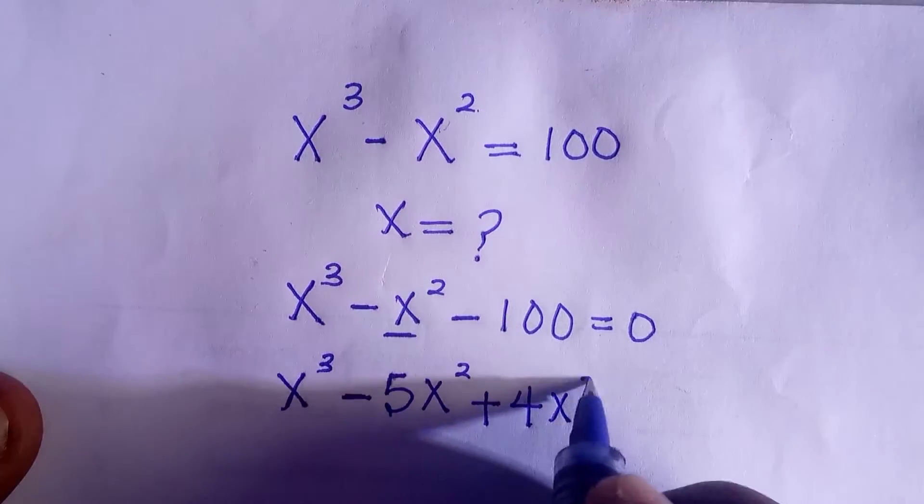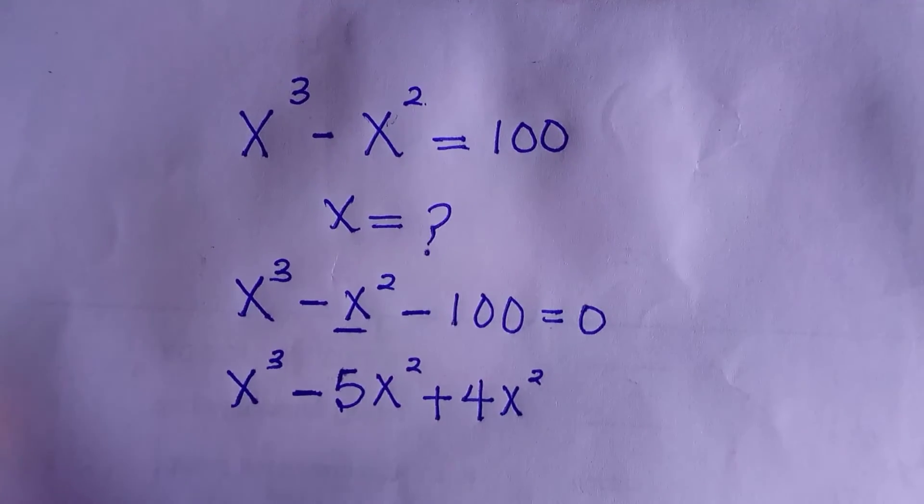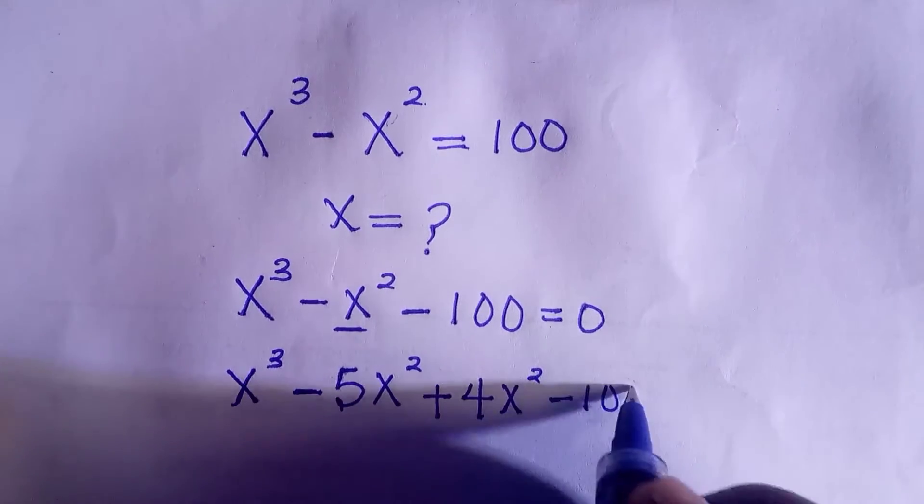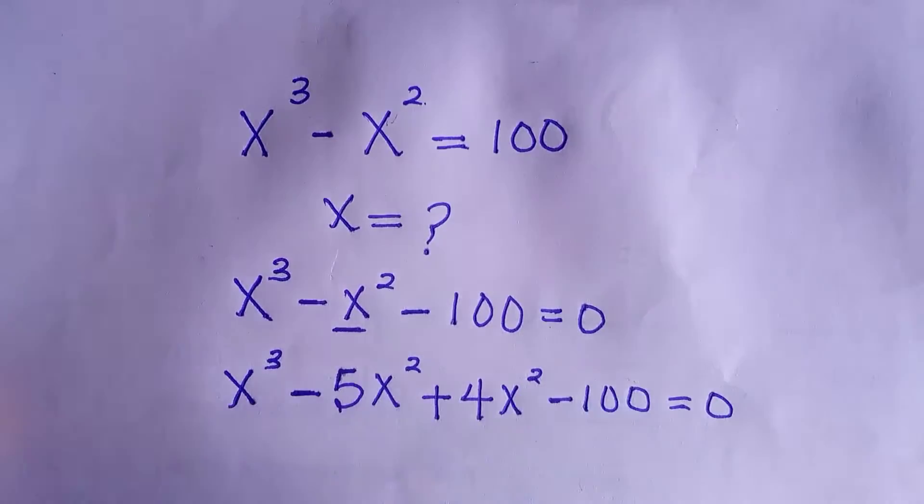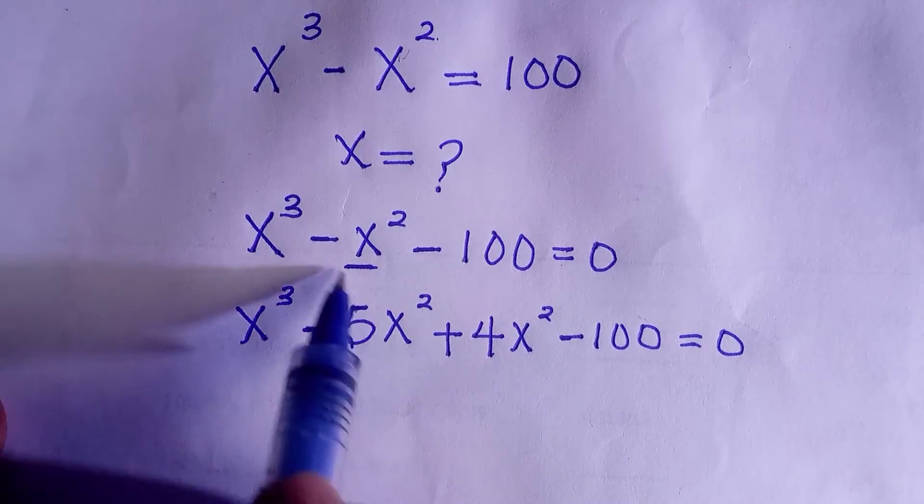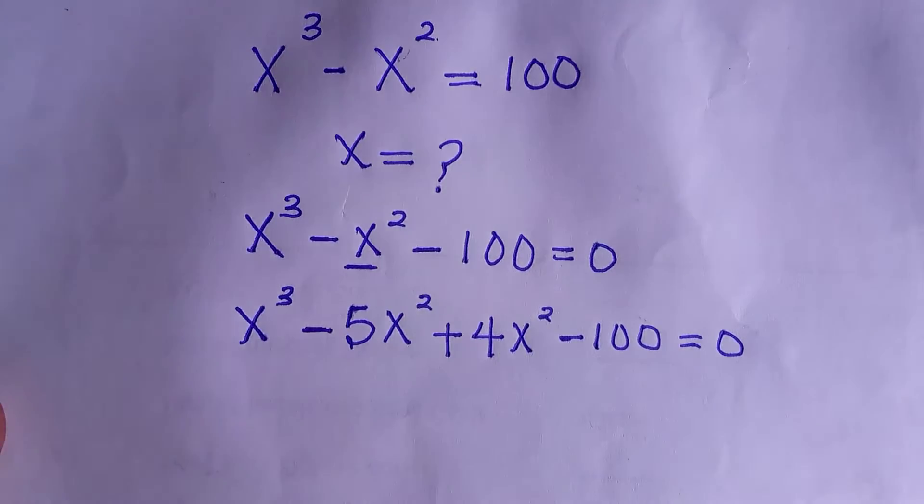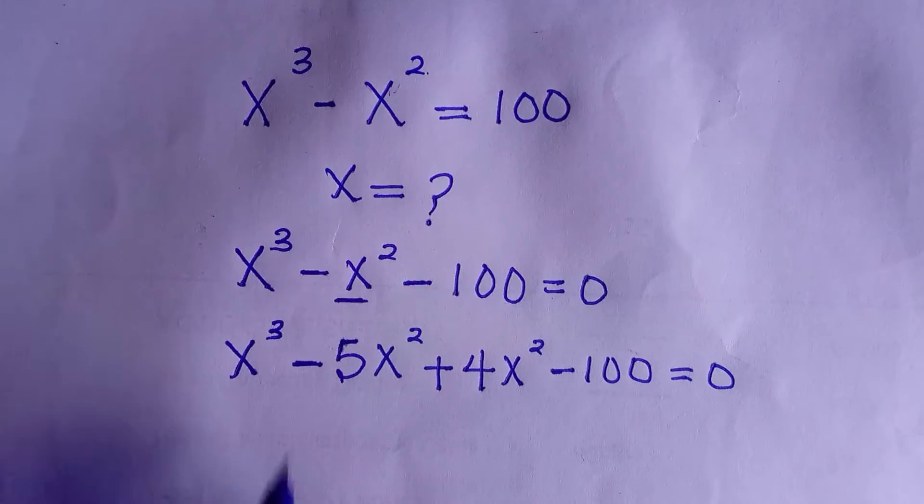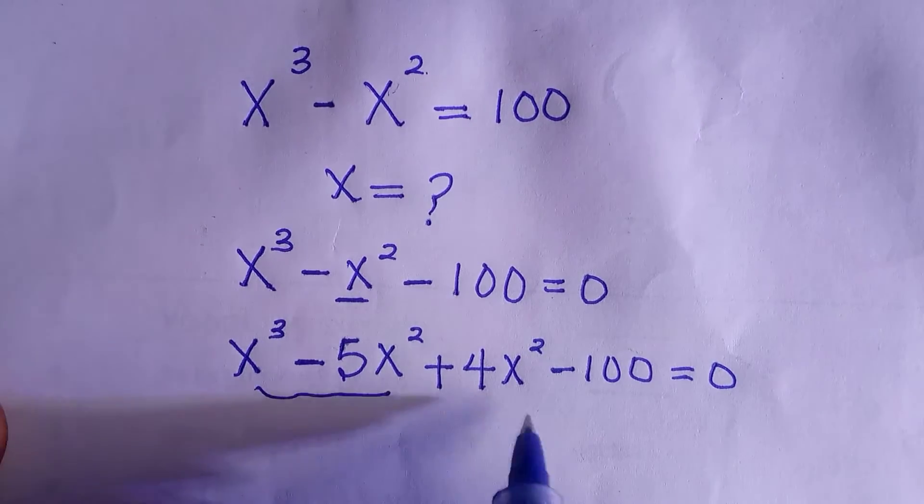Then we are going to have minus 100 equals to 0, and this is making sense because addition of these two equals to negative x squared. So we have four different terms so we can group this thing into 2.